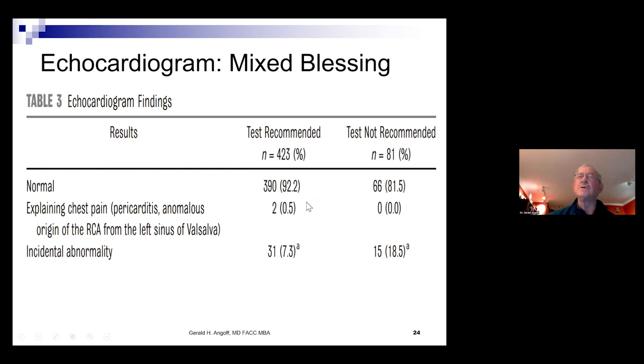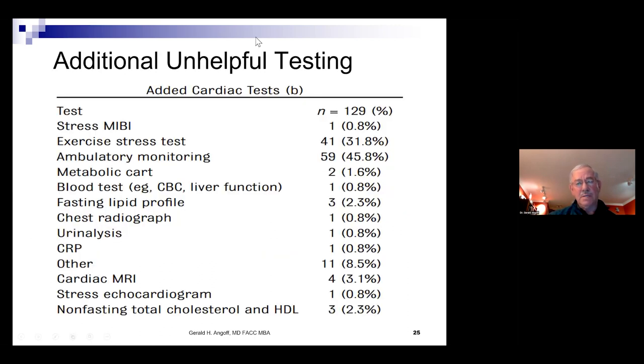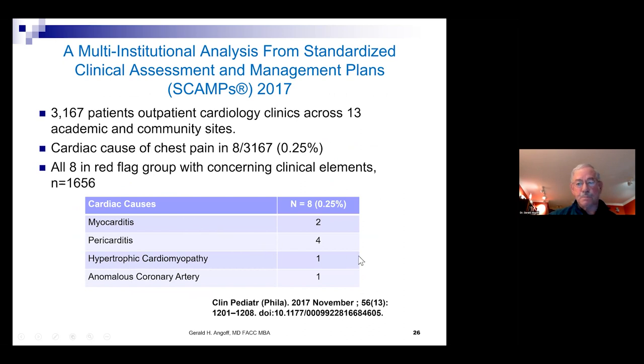The pericarditis and the anomalous coronary artery. It was the hypertrophic cardiomyopathy and the anomalous coronary artery. But a lot of abnormalities were found that were incidental, and this tended to be a distraction. And the huge, the predominance of echocardiograms that were done based on those clinical elements were normal. Other cardiac testing was unhelpful and included stress testing, ambulatory monitoring, a bunch of lab tests. These tests when done did not help at all in identifying a cardiac cause.